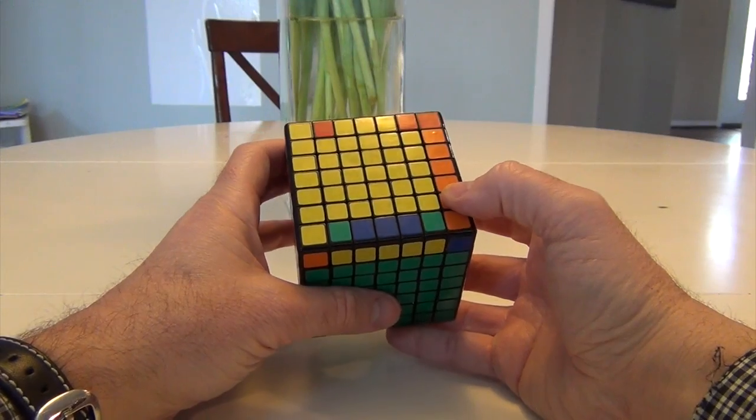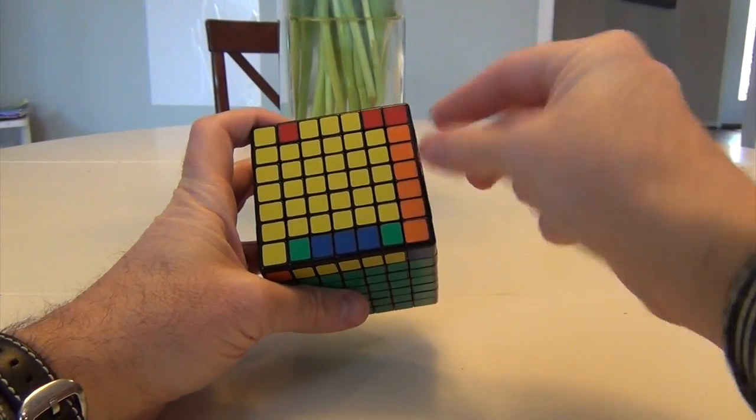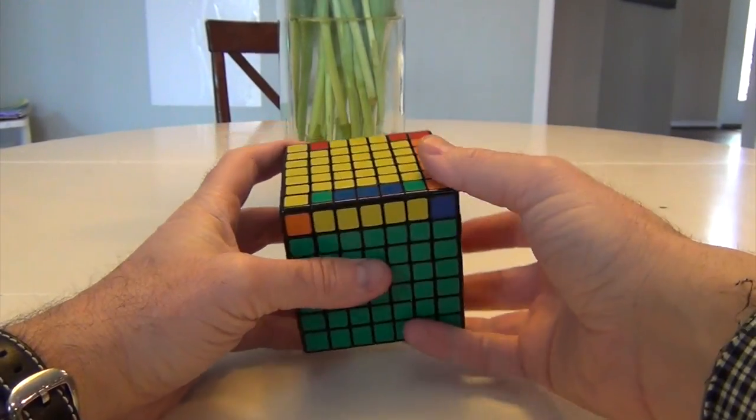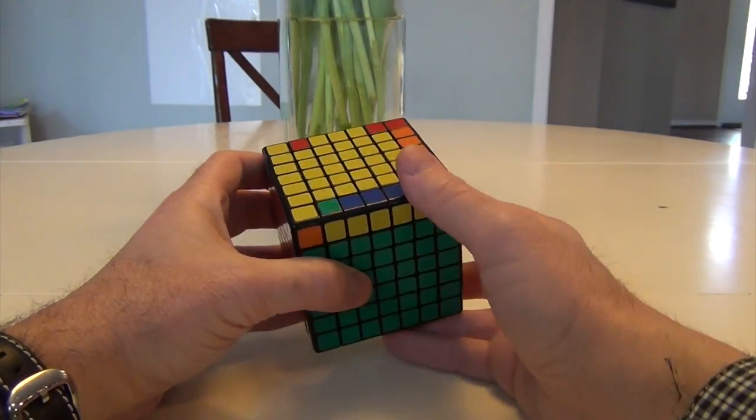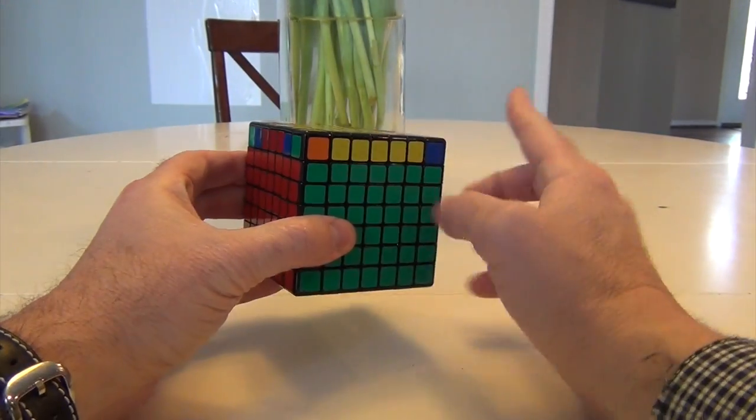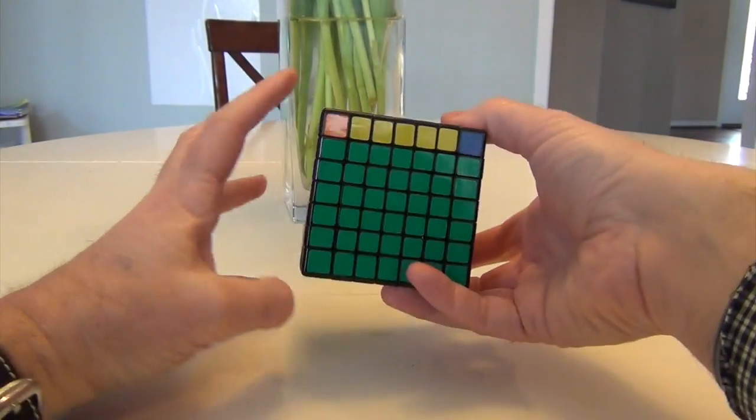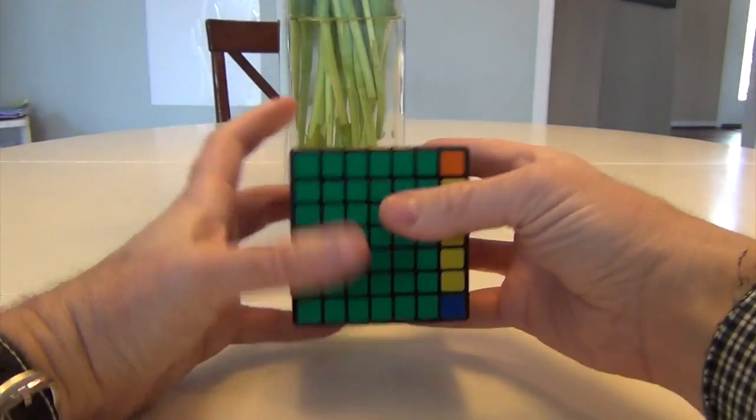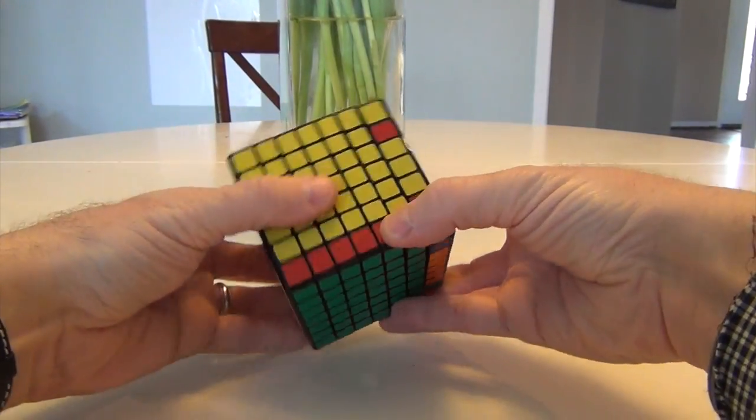The first edge to orient correctly are going to be the middle edges. Now my contention is that you don't really get parity problems on this puzzle, because you're not really reducing it from one parity to the next. Instead, we're doing a sequential reduction using cuboid strategies. The first thing I would do is go ahead and do the algorithm to flip these, and that will be F-U-R-U'-R'-F'.